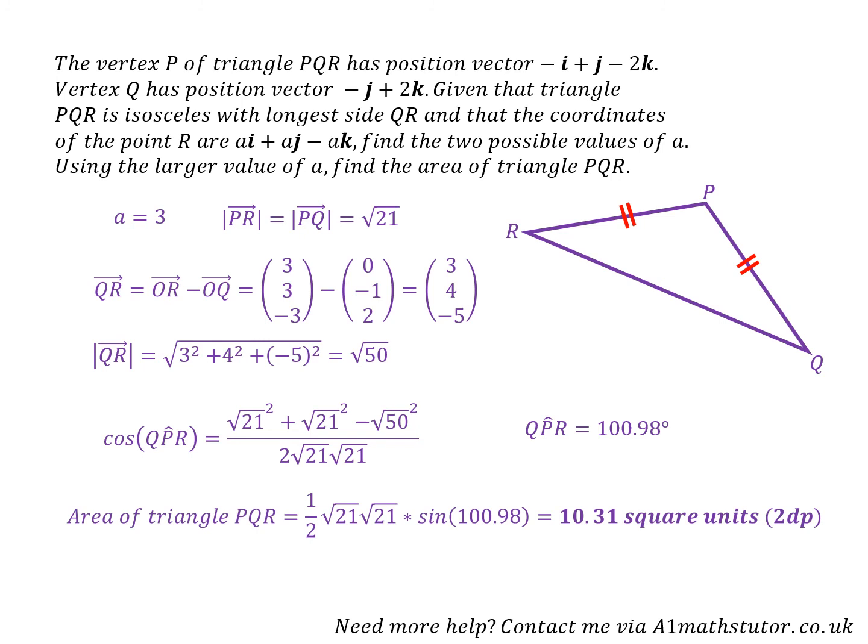And then the area of the triangle PQR, half AB times the sine of C. So that gives me 10.31 square units using two decimal place accuracy. So there we are. That's the answer to that question.